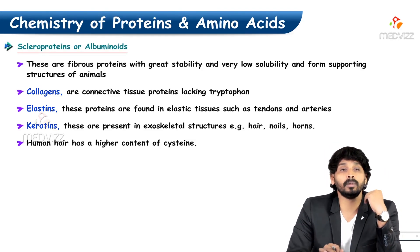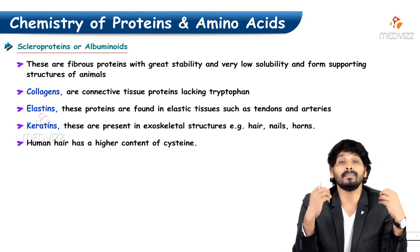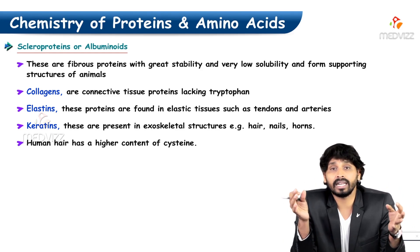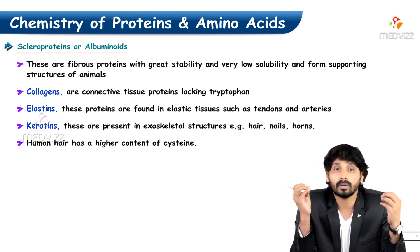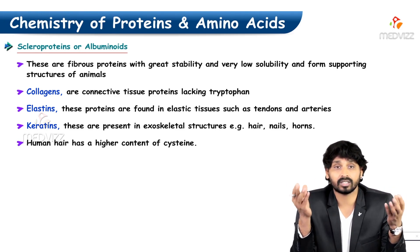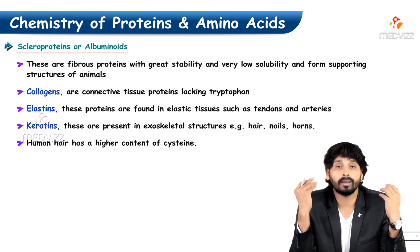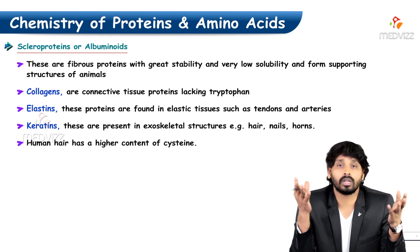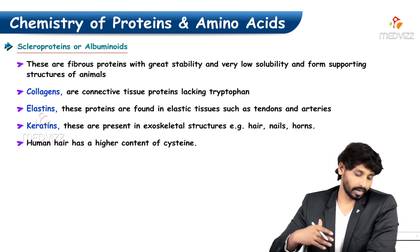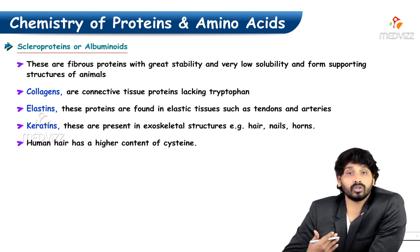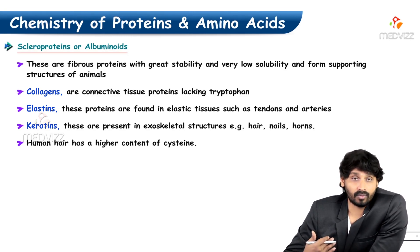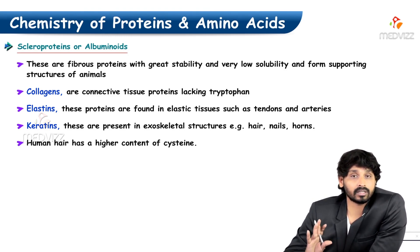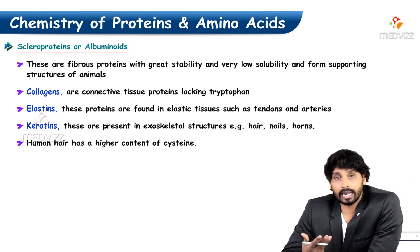Scleroproteins, also called albuminoids, are fibrous proteins with great stability and very low solubility. They form the supporting structure of animals — examples include collagen, elastin, and keratin found in hair, bone, and cartilage. Collagens are connective tissue proteins lacking tryptophan.